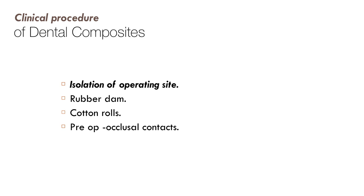For isolation of the operating site, rubber dam is the material of choice. Cotton rolls are not preferred because they get wet and need frequent changing. Before starting any restoration, record pre-operative occlusal contacts — take photographs of the contacts so that after finishing the restoration, post-op contacts can be matched to pre-op. This minimizes the need to grind tooth surfaces after restoration.